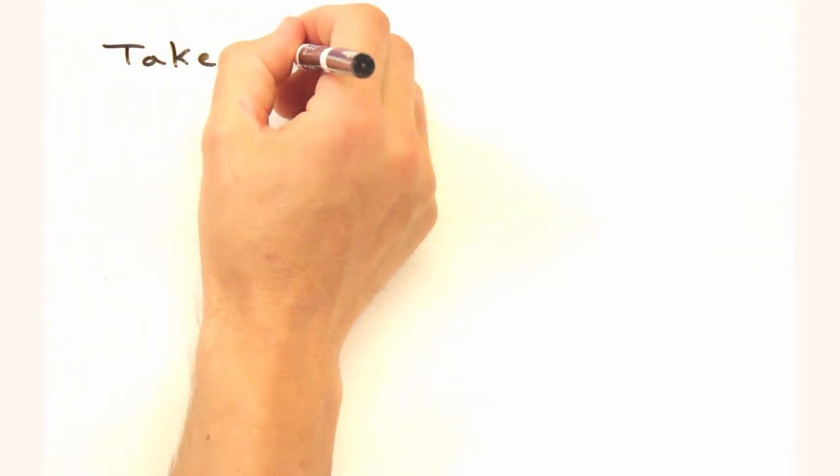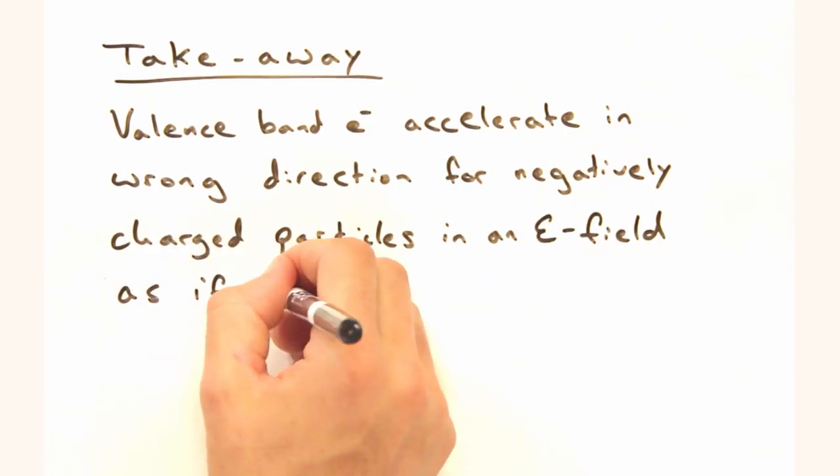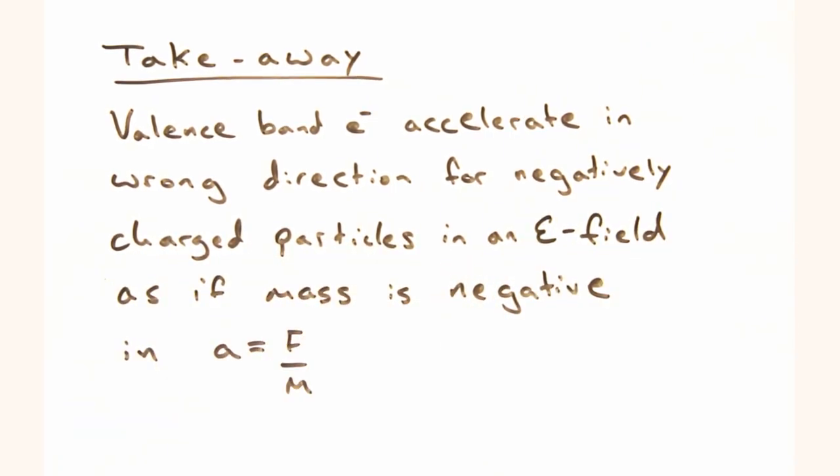So in practice, physicists prefer to think about imaginary particles, with positive mass and positive charge, rather than electrons with negative mass and negative charge. Both are pretty unsettling.